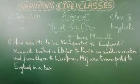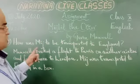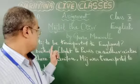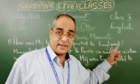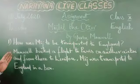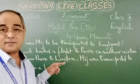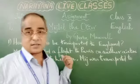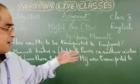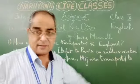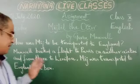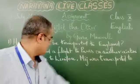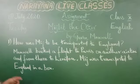How was Midge, short for Midge Bill the Otter, to be transported to England? Maxwell booked a flight to Paris on another airline and from there to London. Midge was transported to England in a box.